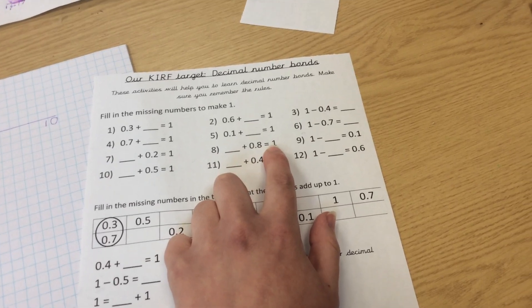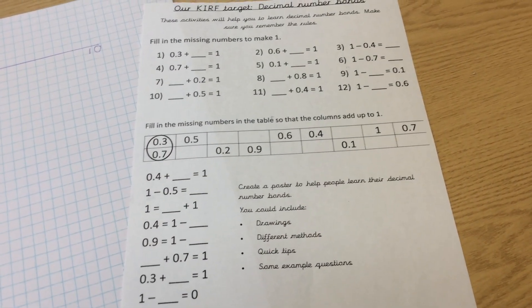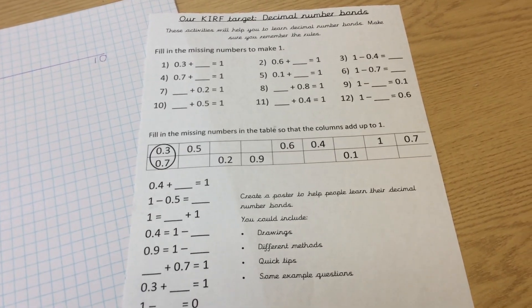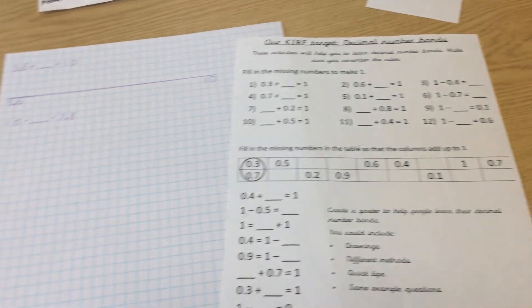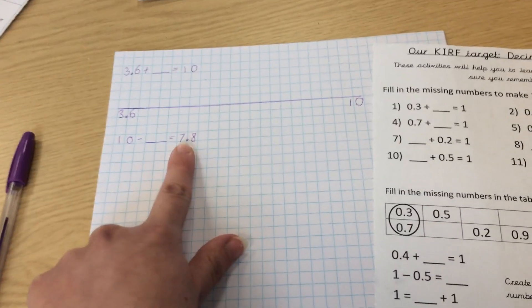You've had quite a few activities based on these for the last two weeks. This week and for the following three weeks we are developing decimal number bonds to 10 as you can see here.